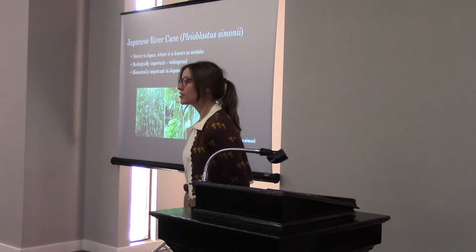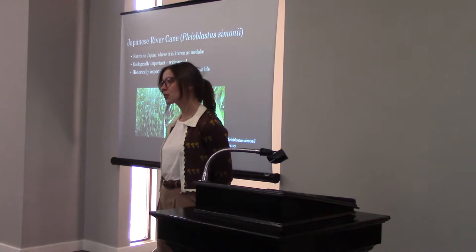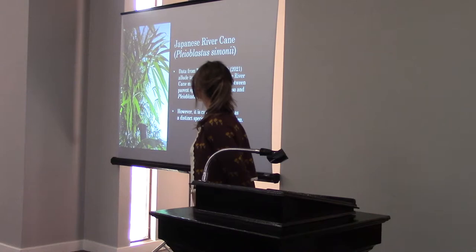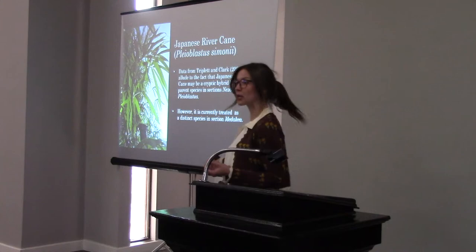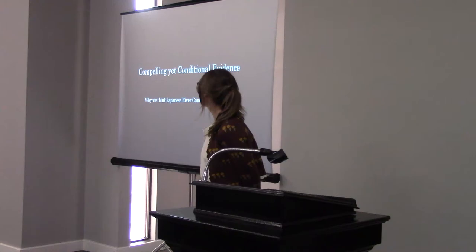Of particular interest is the Japanese river cane, Pleioblastus simonii. This bamboo is native to Japan where it's known as Meidake. It's really widespread and economically important, and also important in the history of rural farm life in Japan because it is used in roof thatching, fences, and other structures. Data from Triplett and Clark have alluded to the fact that this bamboo may actually be a cryptic hybrid between species in section Nasosa and section Cleoblastis. But right now this bamboo is actually treated as a distinct species in its own section, Meidakea.